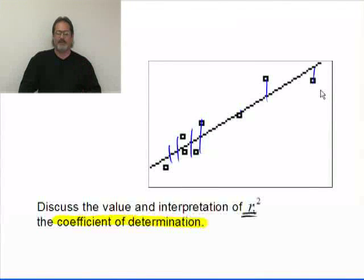The interpretation for the coefficient of determination is simply the amount or the percentage of variability in the dependent variable, the y variable, that's being explained by the independent variable, the x variable.